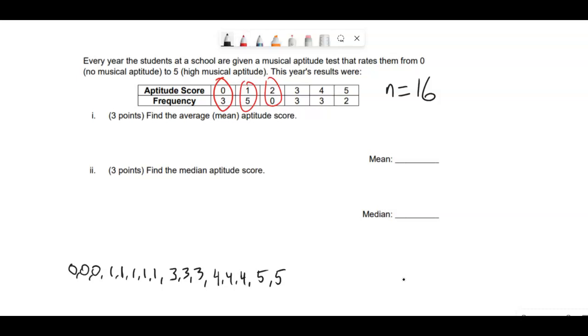So three times zero is zero, plus five times one, which is five, plus zero times two, again zero, three times three is nine, plus four times three is twelve, and finally five times two is ten. So that would be equivalent to adding up all of these individual numbers.